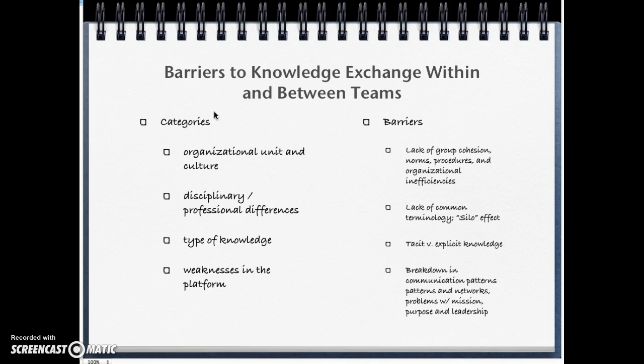There are barriers to knowledge exchange within and between teams. Categories include organizational unit and culture — which can involve lack of group cohesion, lack of norms, procedures, and organizational inefficiencies — and disciplinary or professional differences, such as a lack of common terminology. The silo effect refers to information not flowing between parts of the organization, where one part keeps all the information without sharing it.